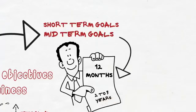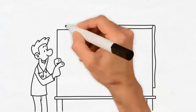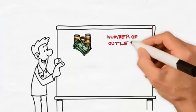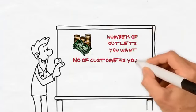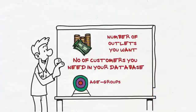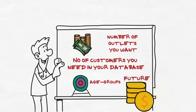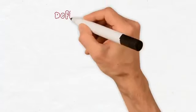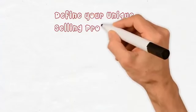Consider all aspects such as the revenue you wish to generate, number of outlets you want, the number of customers you need in your database, the target population and age groups, as well as the amount of passive income that needs to be generated in future. Step 3: Define your unique selling proposition.